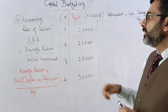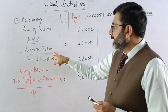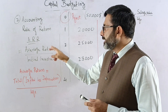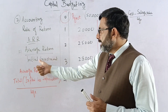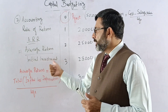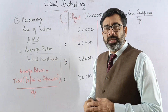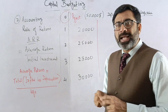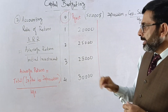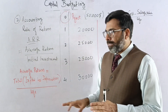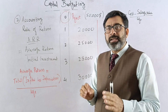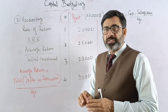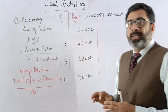First, we have to calculate the average return, and then divide it by the initial investment. The average return is basically the return on investment — the inflows from the project.